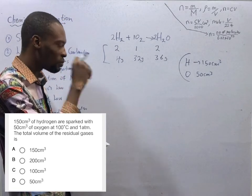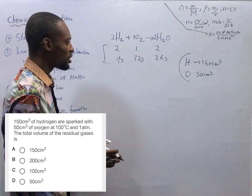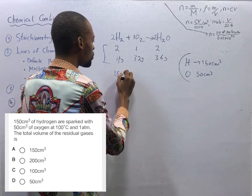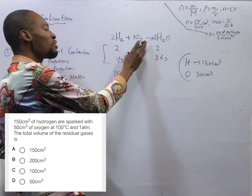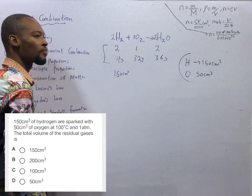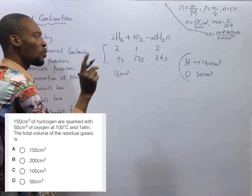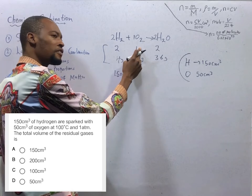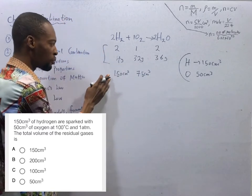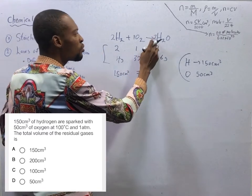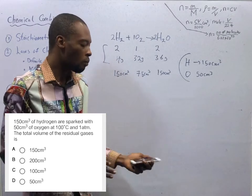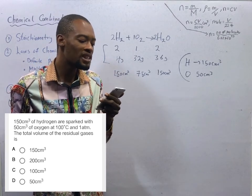Let's compare what is to what should be. Hydrogen is 150 cm³. If hydrogen is reacting with oxygen with the ratio 2 ratio 1, and 2 is 150, what will 1 be? If 2 is 150, 1 is supposed to be 150 divided by 2, 75. This is what it is supposed to be. While if 2 is 150 cm³, 2 moles of water will also be 150 cm³. This is supposed to be. But look at the question. They only gave us 50 cm³ of oxygen.